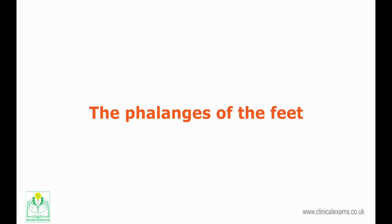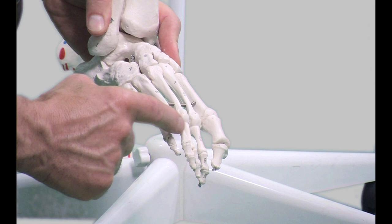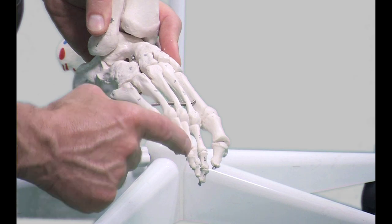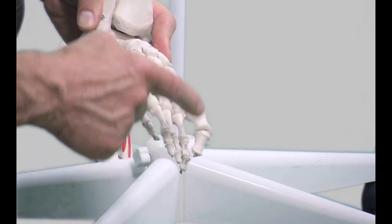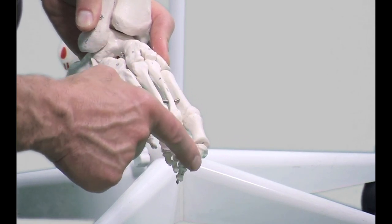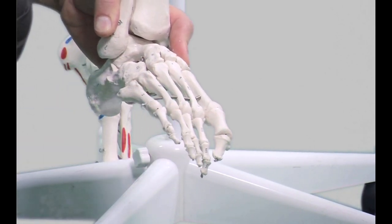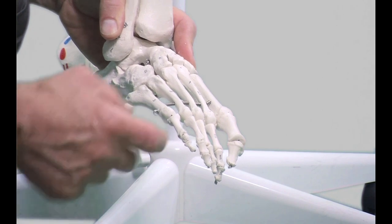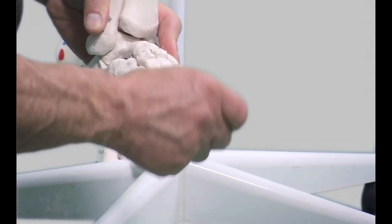Like the hands, there are three phalanges for each toe: a proximal, an intermediate and a distal phalanx. The first toe has only two phalanges, a proximal and a distal. These are long bones forming hinge-like joints. The smallest is the distal phalanx of the fifth toe.